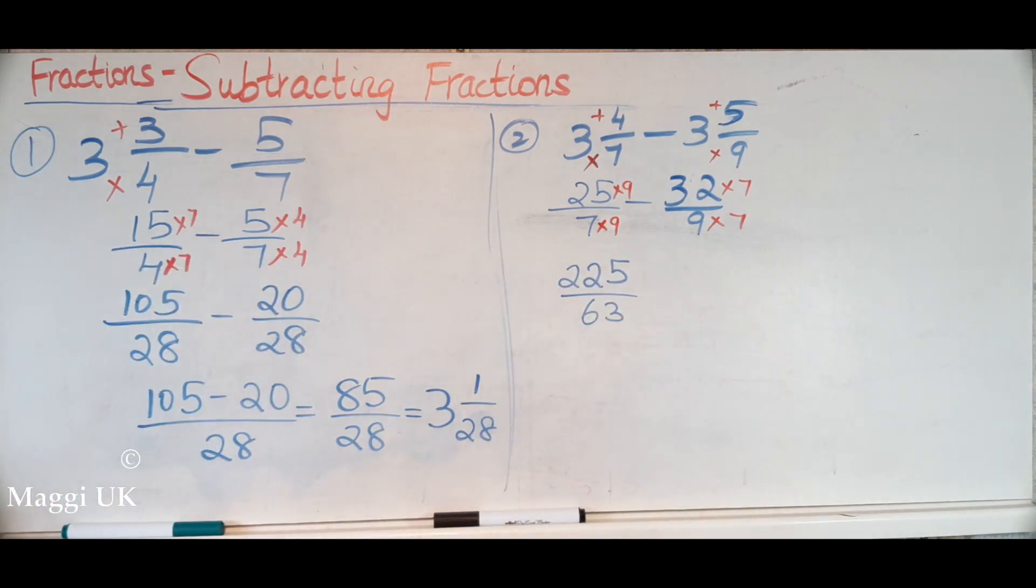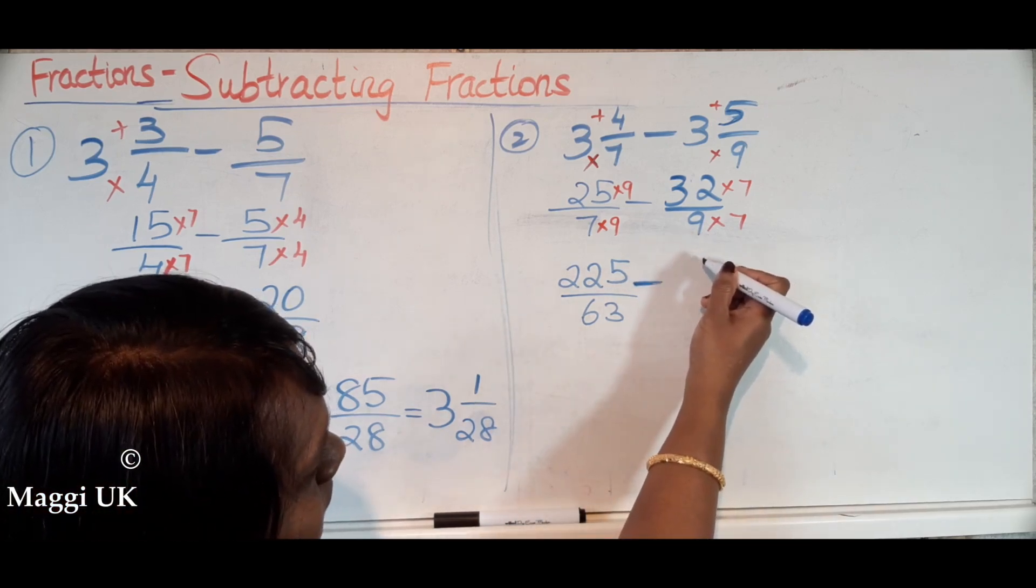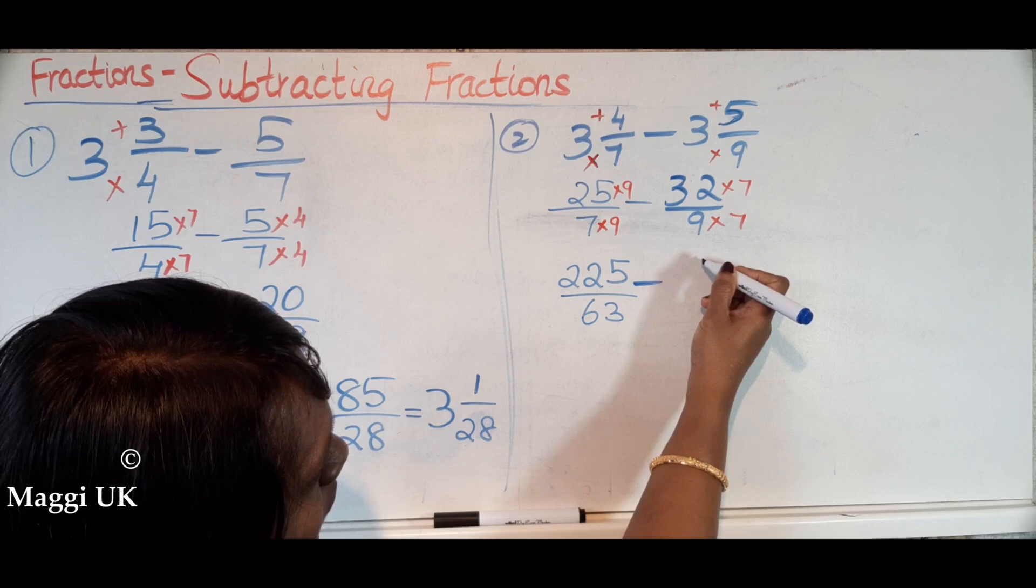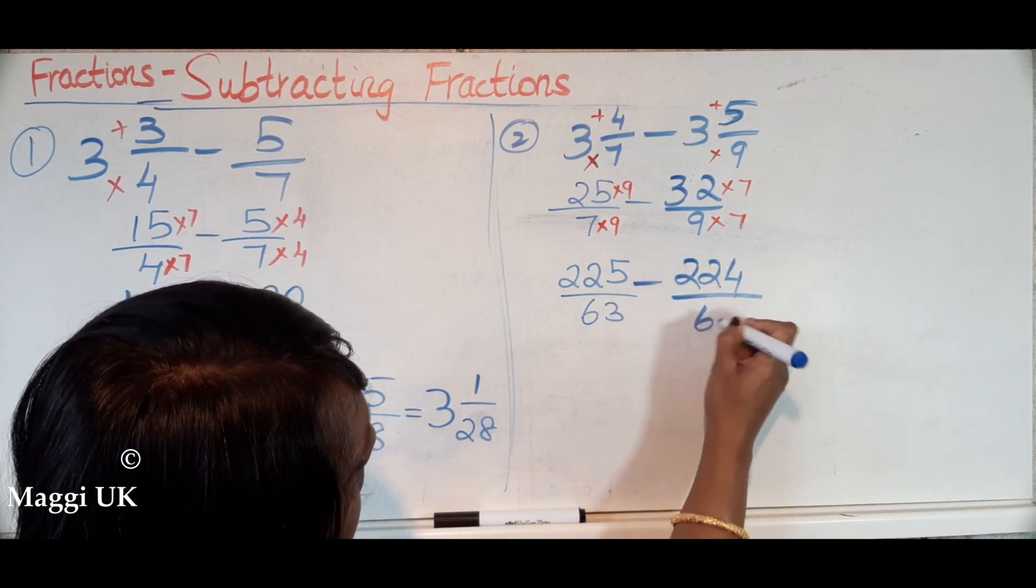Okay, then we have to take 32 times 7, which I believe is 224 over 63. So now we got the same denominator, we are going to put the same denominator, and then we are going to do 225.